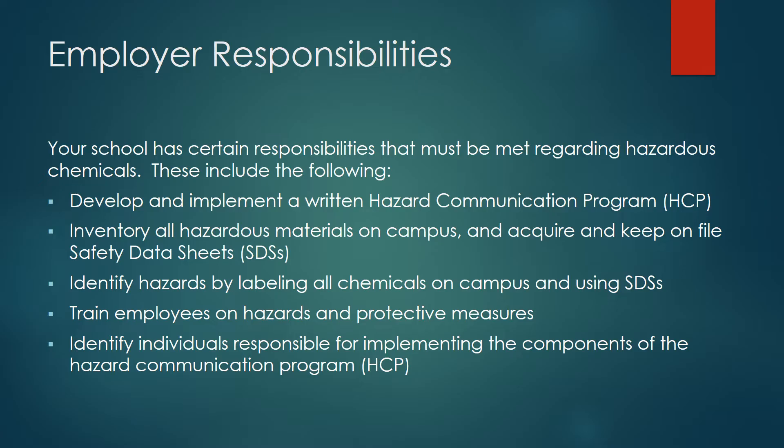Your school has certain responsibilities that must be met regarding hazardous chemicals. These include: develop and implement a written hazard communication program; inventory all hazardous materials on campus and acquire and keep on file safety data sheets; identify hazards by labeling all chemicals on campus and using SDSs; train employees on hazards and protective measures; and identify individuals responsible for implementing the components of the hazard communication program.